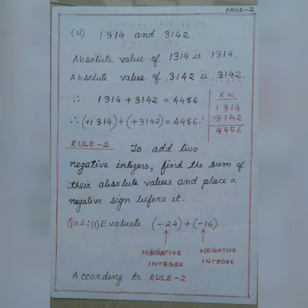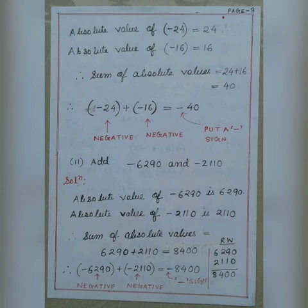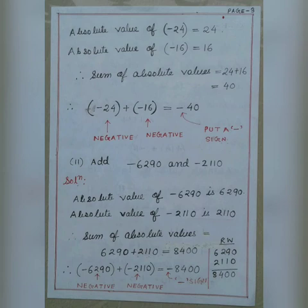Rule number 2: to add two negative integers, find the sum of their absolute values and place a negative sign before it. For example, evaluate minus 24 plus minus 16. Minus 24 is a negative integer and minus 16 is also a negative integer. According to rule number 2, the absolute value of minus 24 is 24 and the absolute value of minus 16 is 16. Therefore the sum of absolute values is 24 plus 16 equals 40. As both numbers are negative, we put a negative sign before 40.